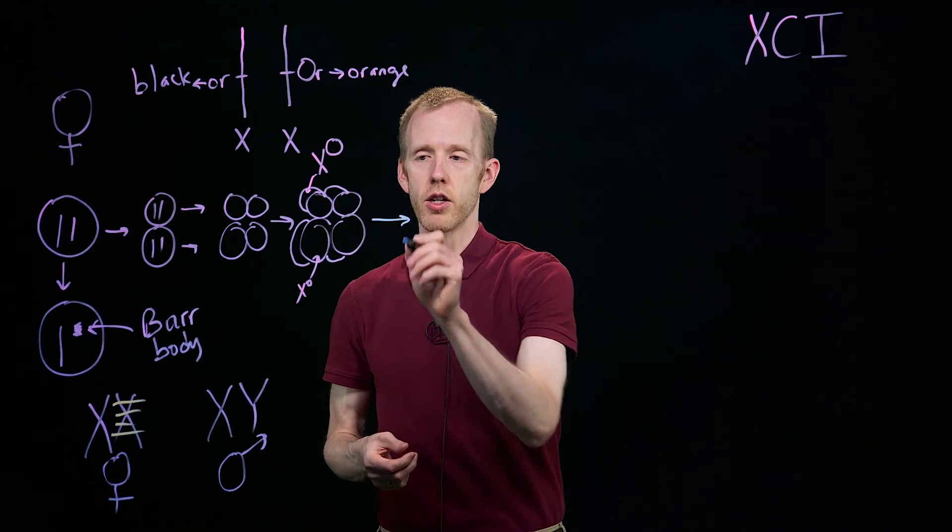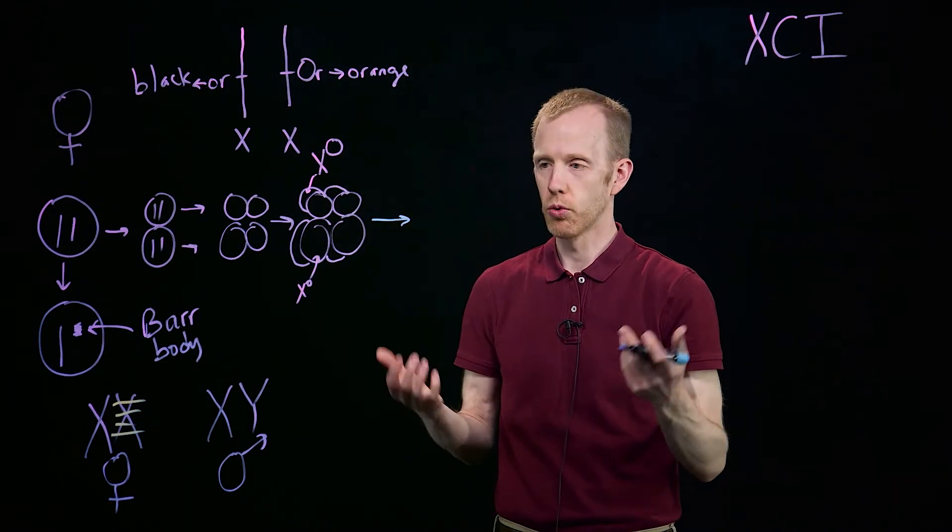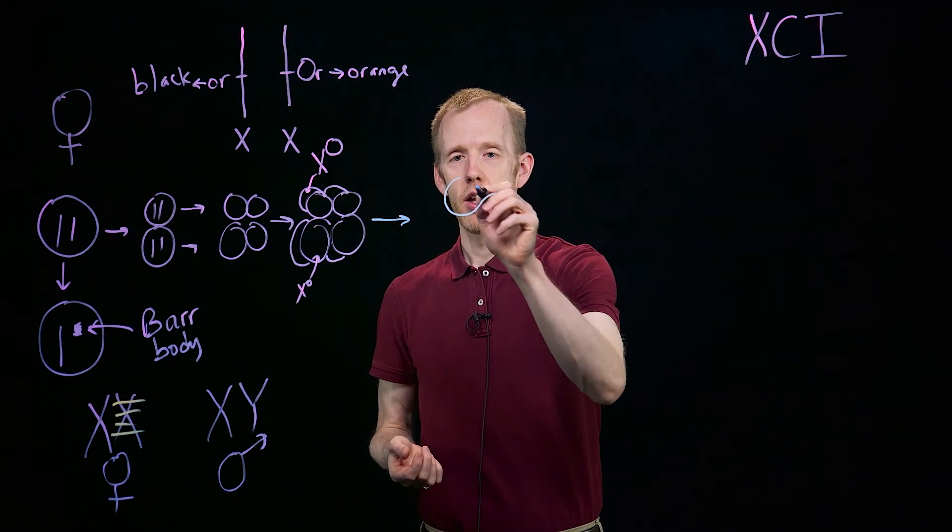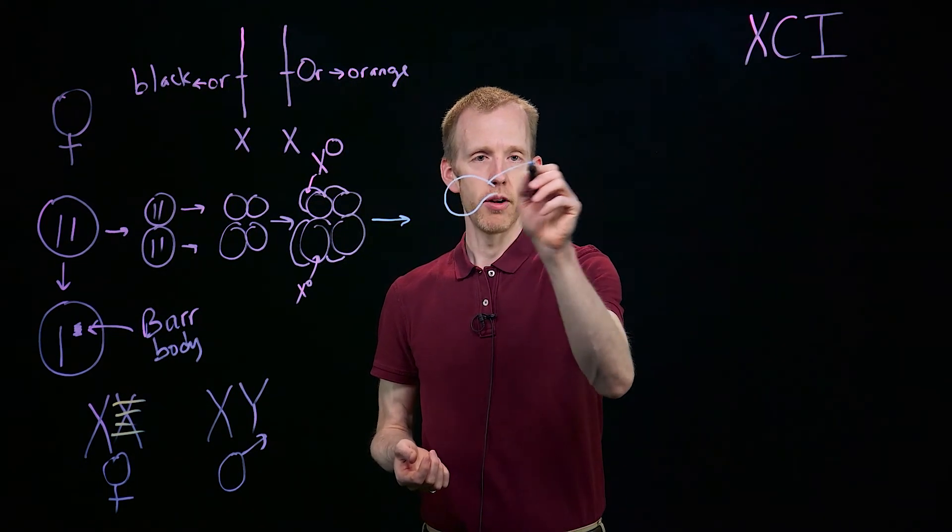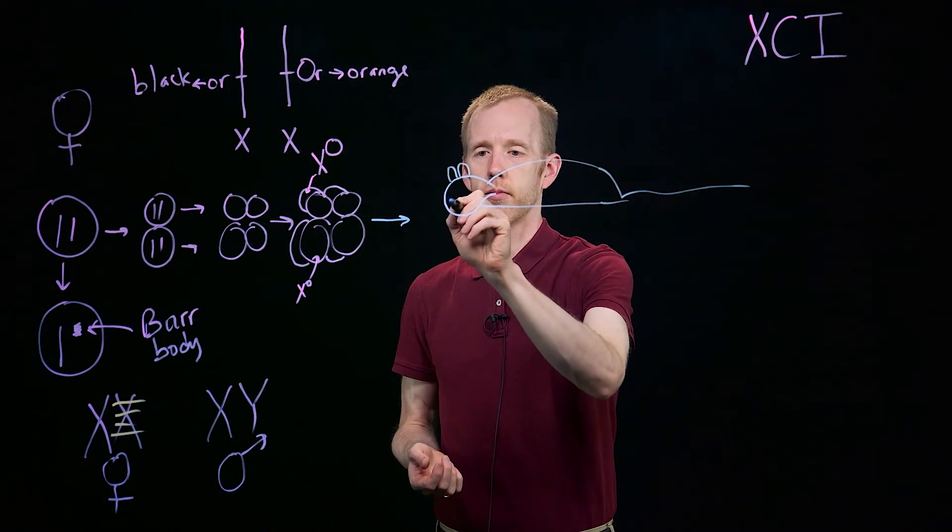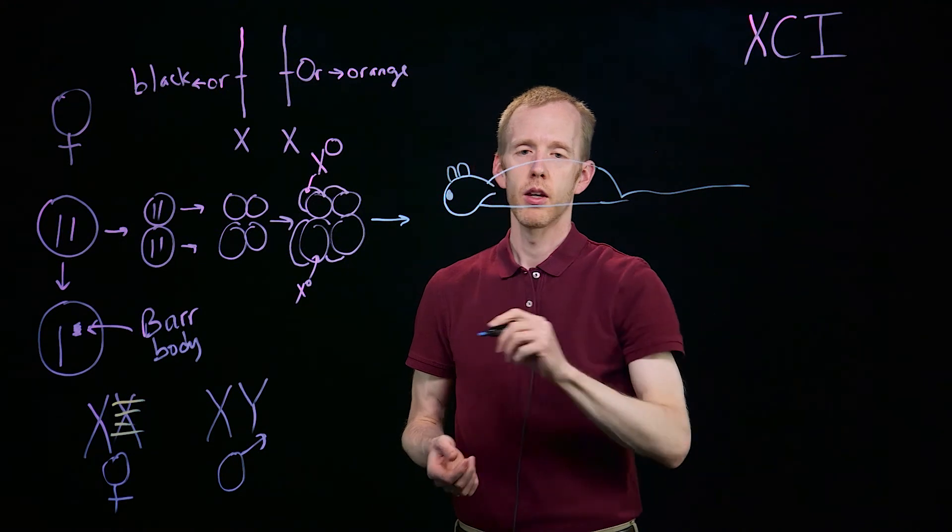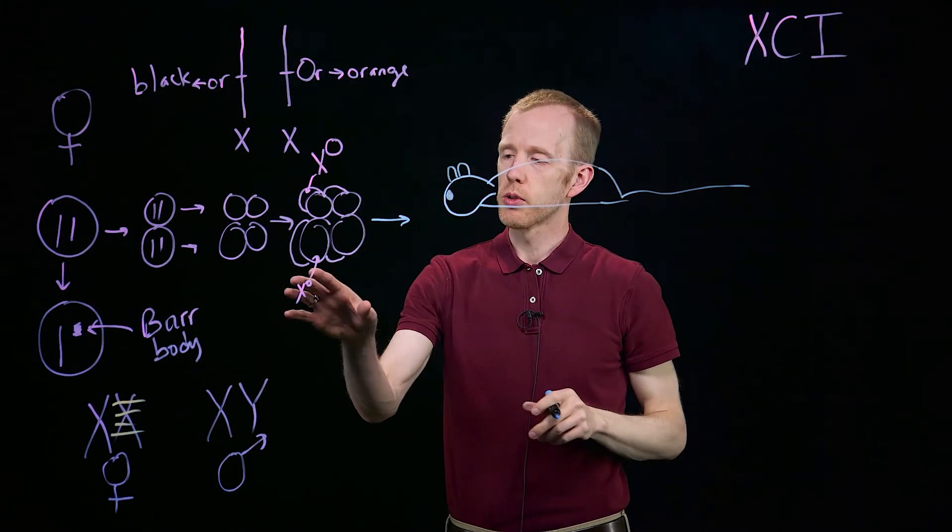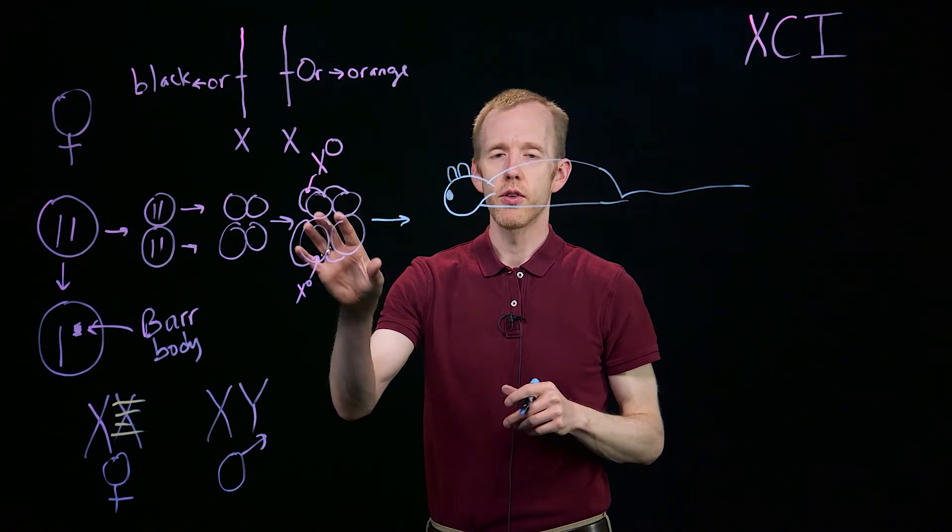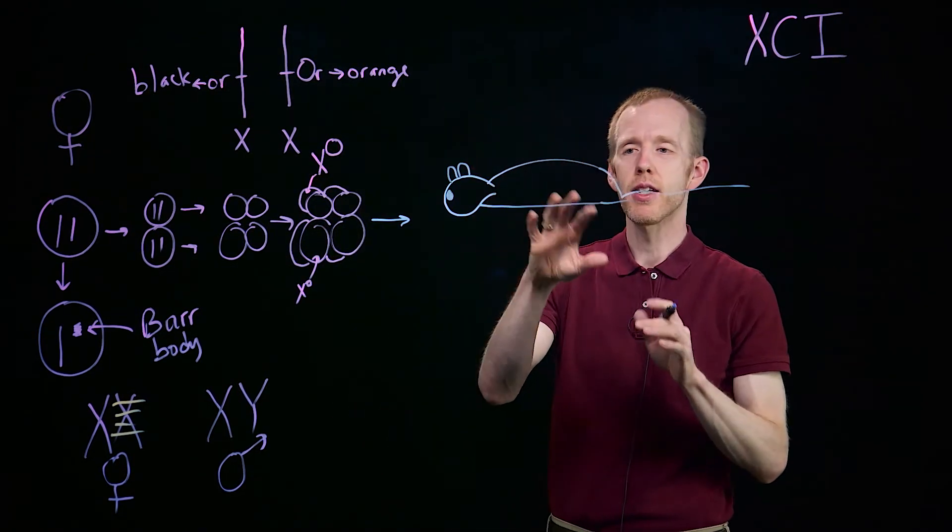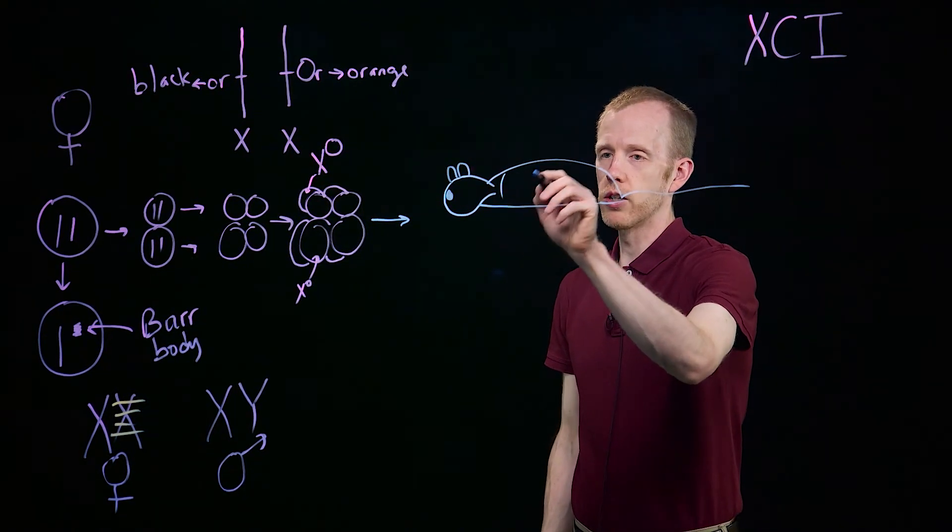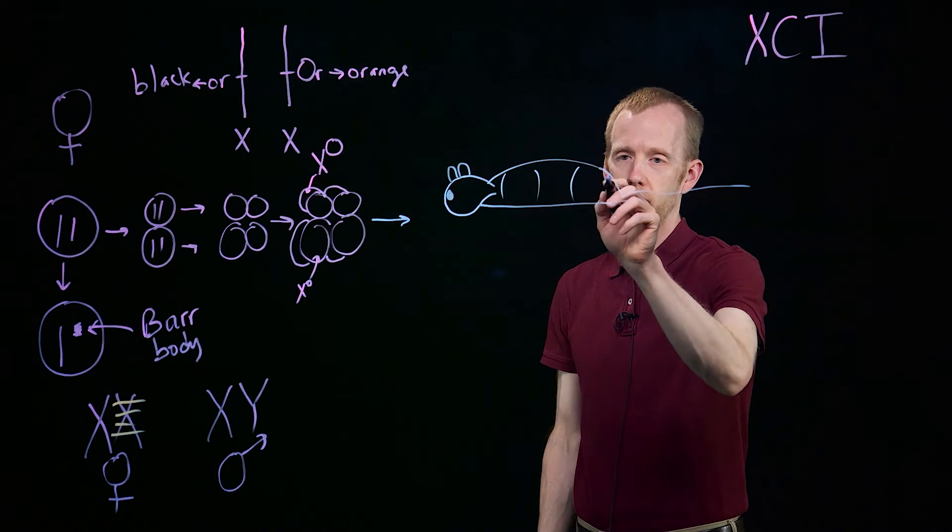After development concludes, then you might have a cat, or a rat, or a mouse, or whatever, that has blotches. So now I'm going to focus on mouse. If X chromosome inactivation occurs at the eight-cell stage, then you'd expect, roughly, eight different patches on the coat of this mouse to have either the orange or black pigmentation.